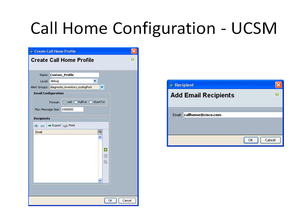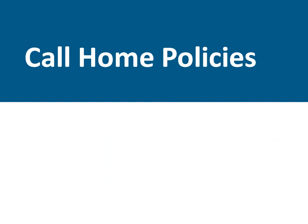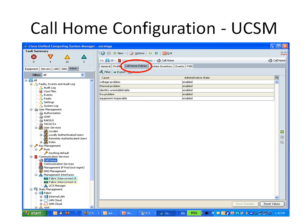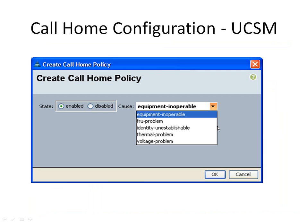The next step is to configure your Call Home policies. Call Home policies determine whether or not Call Home alerts are sent for a specific type of fault or system event. By default, Call Home is enabled to send alerts for certain types of faults and system events. To disable alerts for a type of fault or event, you must create a Call Home policy for that type and then disable that particular policy. Click on the Call Home Policies tab, next to Profiles, then click the plus button. Select the state — enable or disable — and select the cause type. Each policy defines whether an alert is sent for one type of event. Click OK.